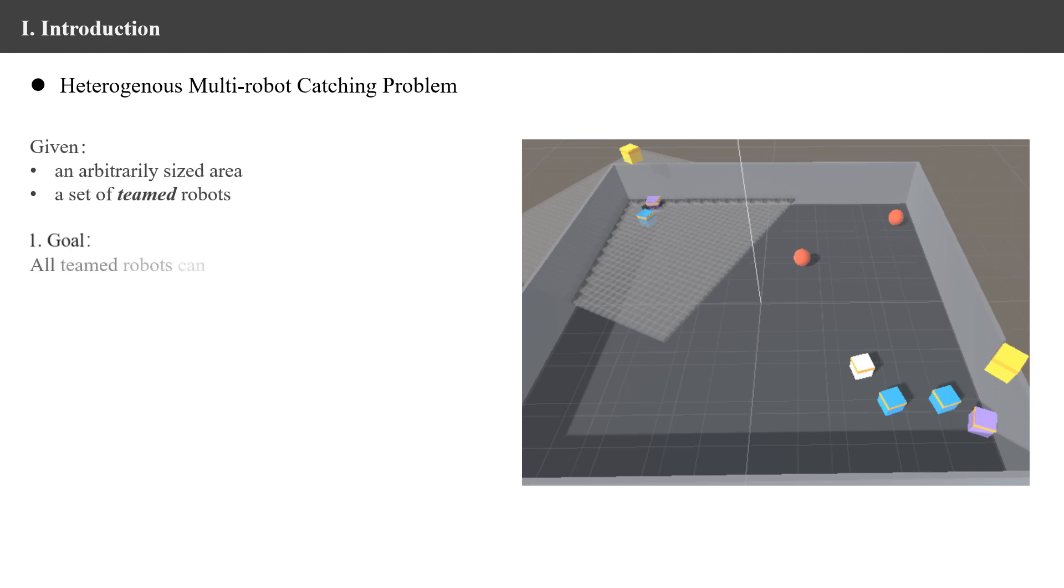Given an arbitrarily sized area and a set of teamed robots, the goal of the heterogeneous multi-robot catching problem is to make sure all teams of robots can collaboratively catch and suspend the intelligent targets continuously.